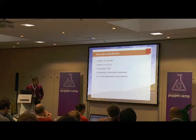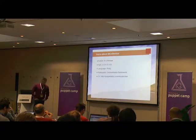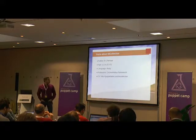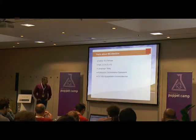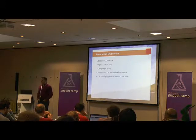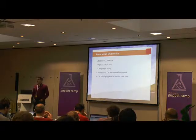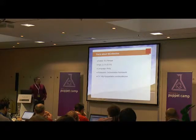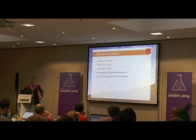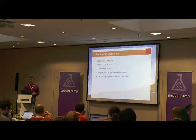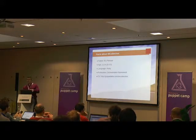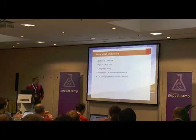First introduction slide — mCollective itself. It was initially architected and written by R.I. Pienaar. We're at version 2.2.4 right now, and the development branch is at 2.3.3. The even numbers are the stable versions and the odd numbers are the development ones. It's written in Ruby — surprise! But of course you can write shell, Perl, or PHP agents for mCollective if you don't like Ruby.